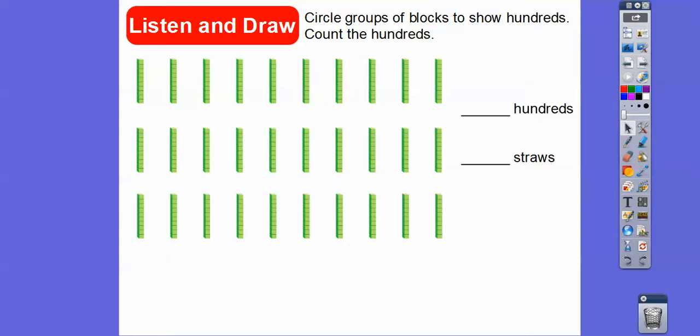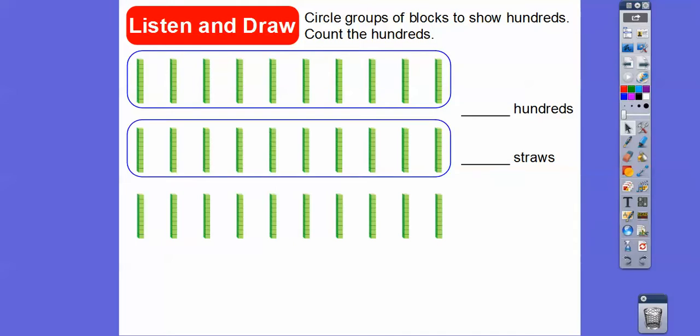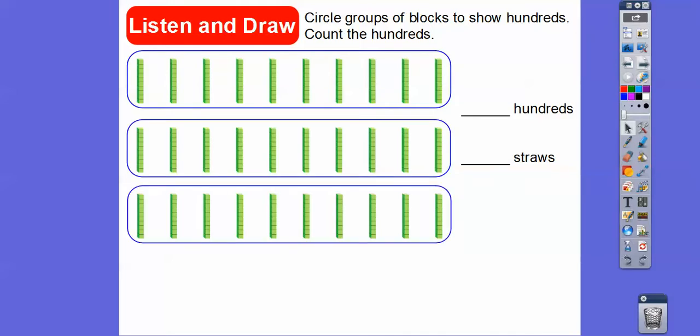It says circle groups of blocks to show hundreds. Remember, ten tens equals a hundred. So here's ten straws — ten of these would equal a hundred. Let's circle that. There's one hundred, two hundred, three hundred. So there are three hundreds.